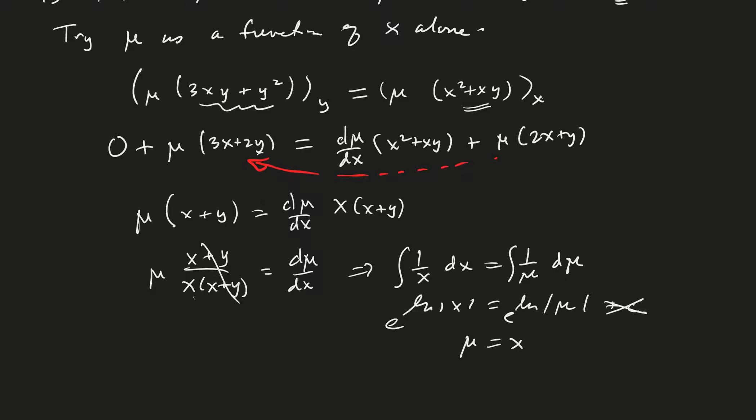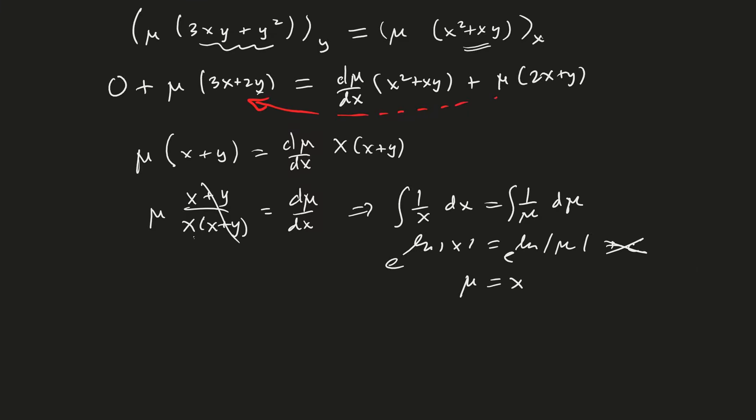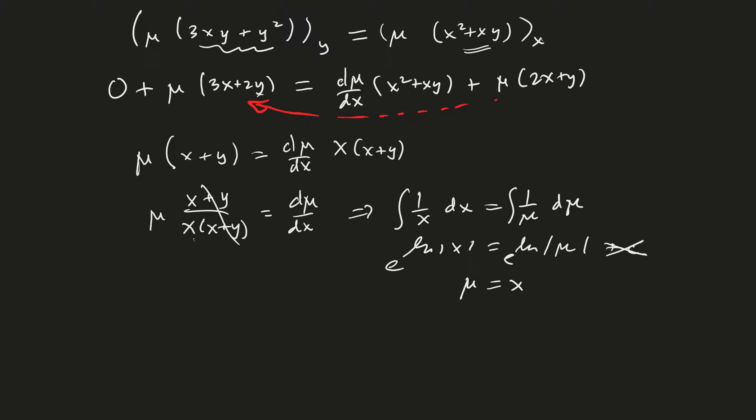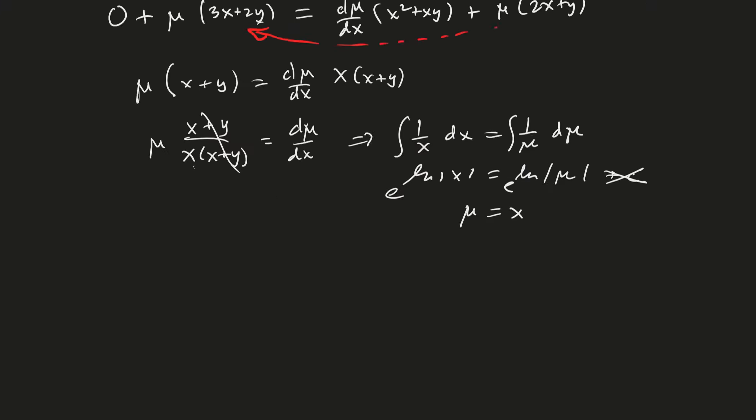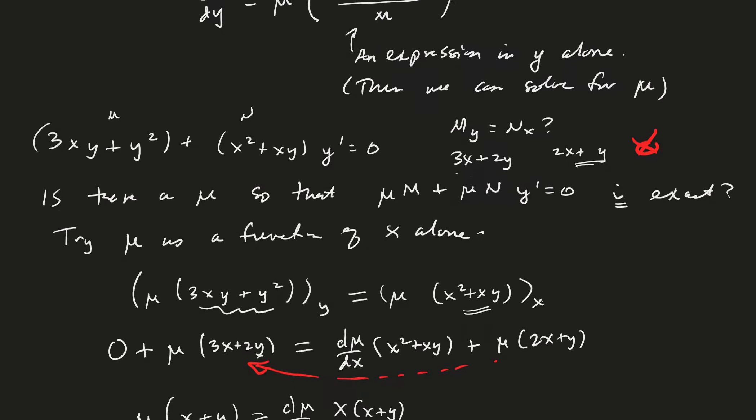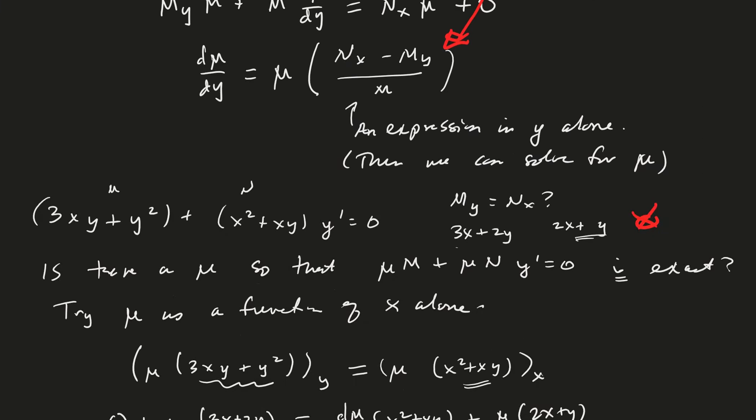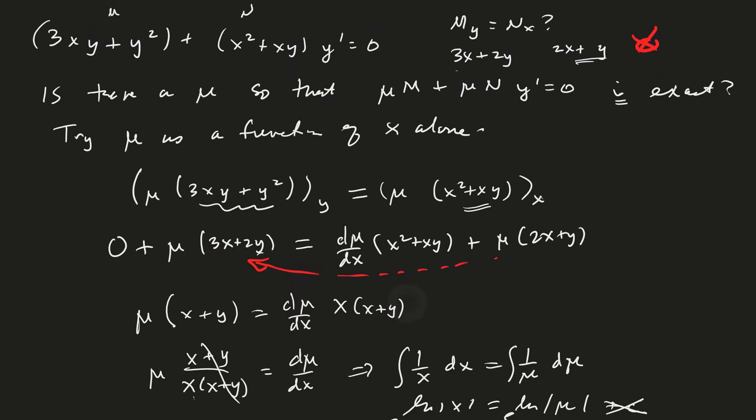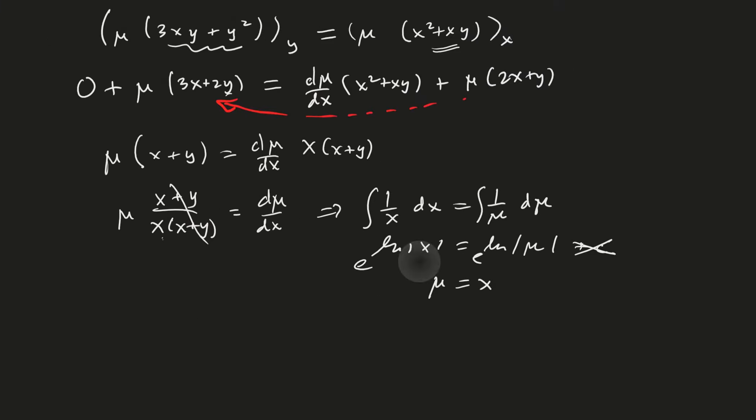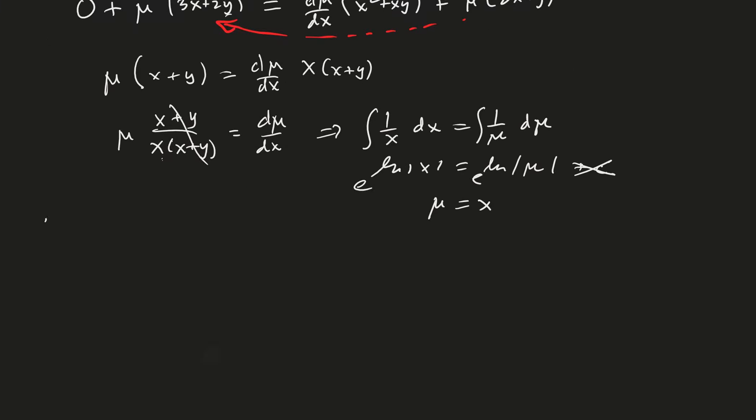So let's see if that was right. Alright, so what's happening is that we said, let's go back to this original. So what we're saying is, is if I multiply this by x, and if I multiply that by x, the equation becomes exact. Let's see if that's true. So just to check,